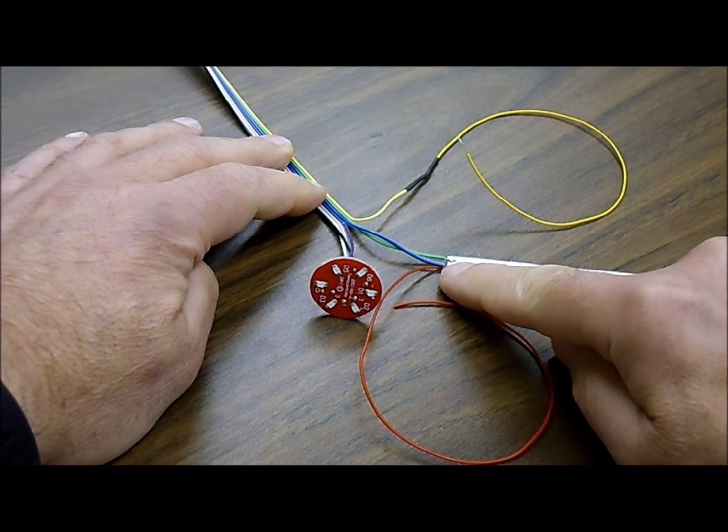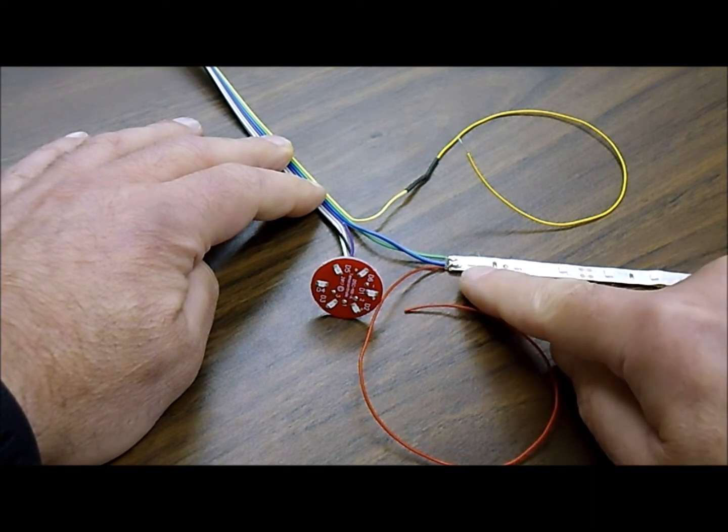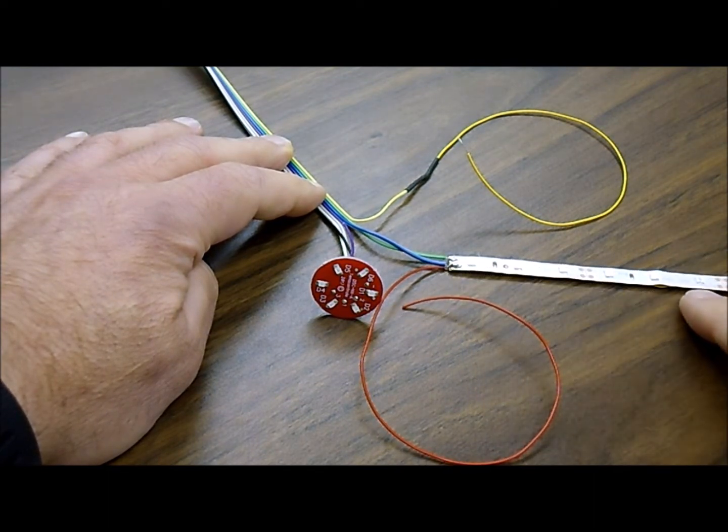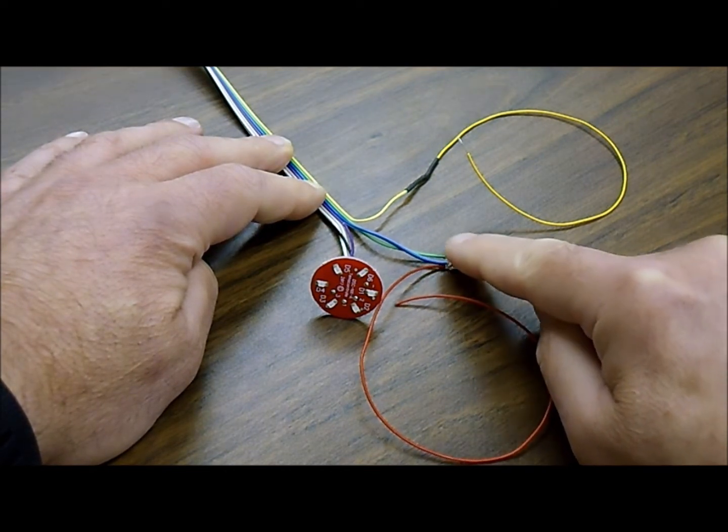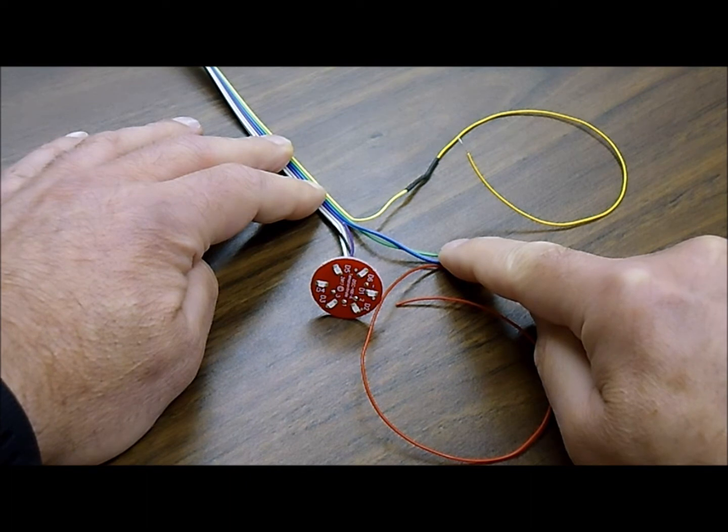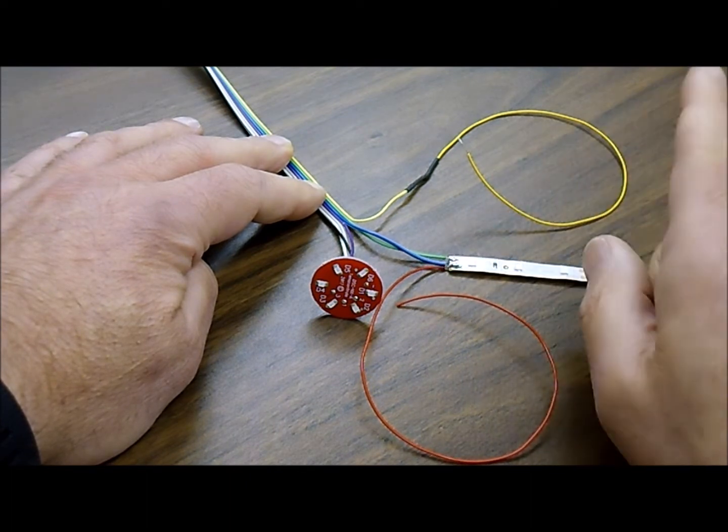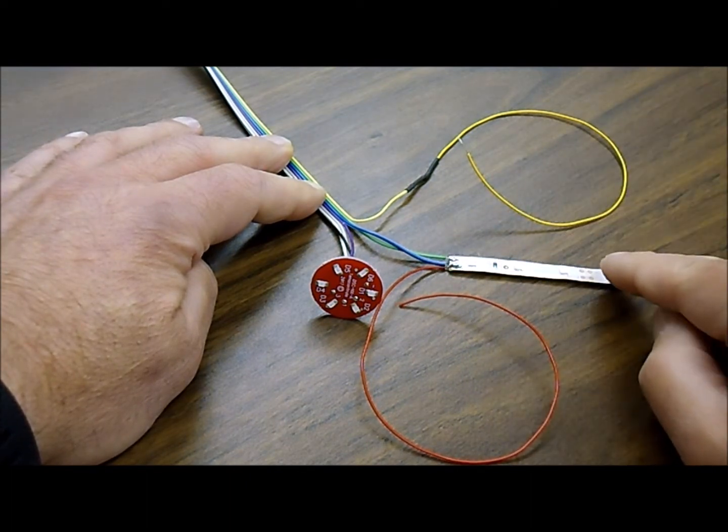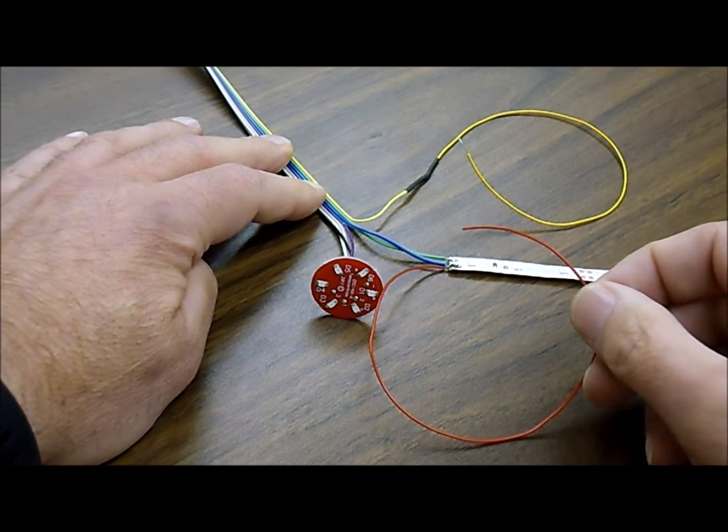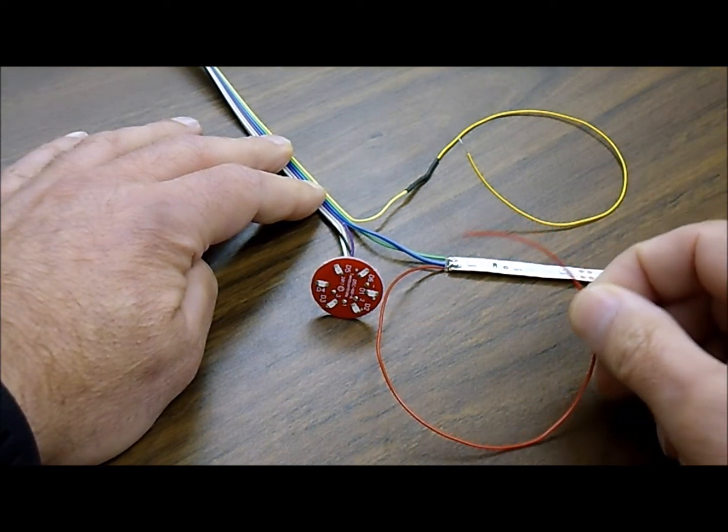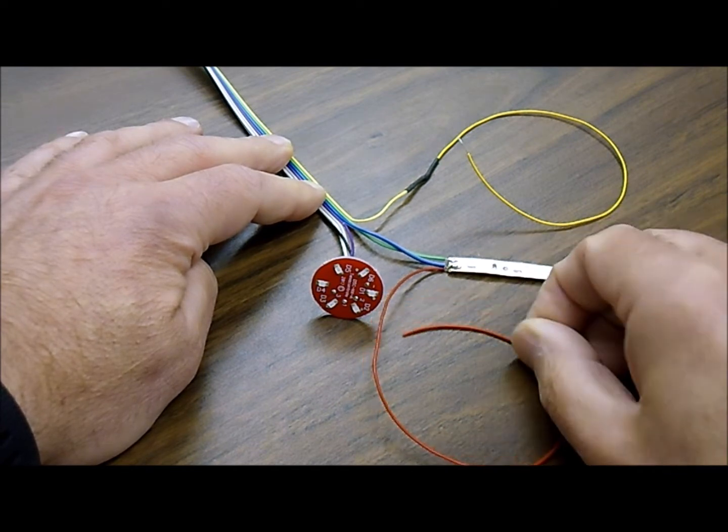You can see the blue wire supplies 12 volts to the LED strip. The minus of the LED strip is the green wire, and that will go to one of our outputs as you'll see in the instructions later. This red wire brings the 12 volts and is spliced into the blue here.